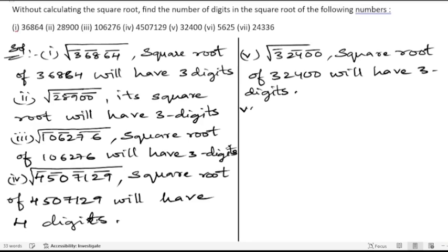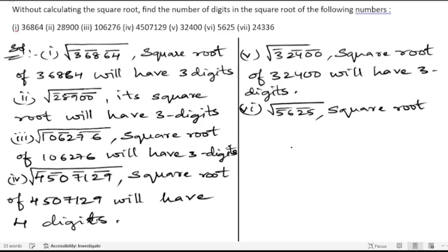The sixth problem is the square root of 5625. We put the bars, and the square root of 5625 will have two digits.